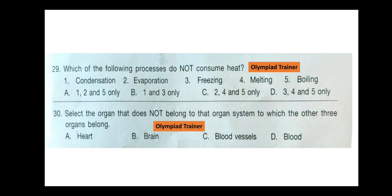Question 30. Select the organ that does not belong to the organ system to which the other three organs belong — find the odd one out. The correct answer is option B — brain. Heart, blood vessels, and blood belong to the circulatory system. Brain is the odd one.